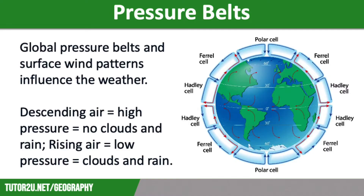The atmospheric circulation results in high pressure at the poles, so they are very dry. A low pressure belt runs around the globe at about 60 degrees, making locations such as the UK wet. There is a band of high pressure around the tropics, so they are dry, with most of the world's hot deserts found in these regions.